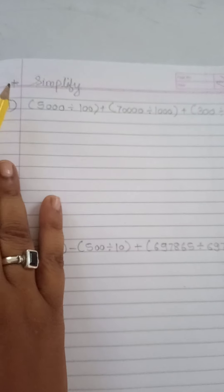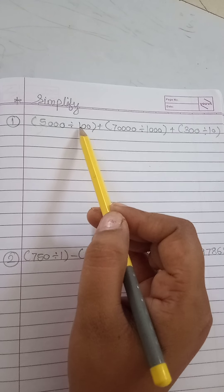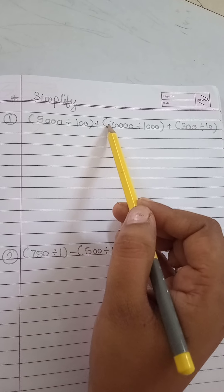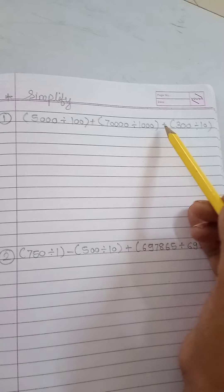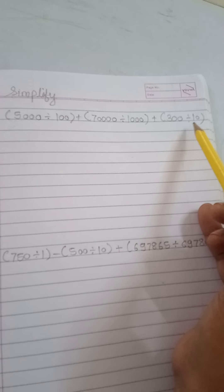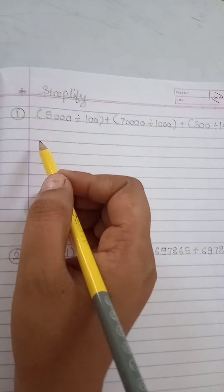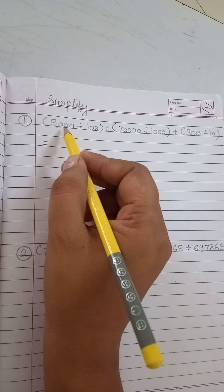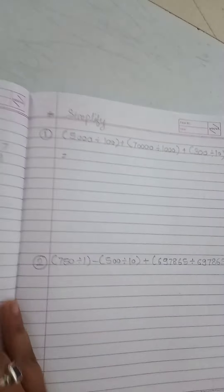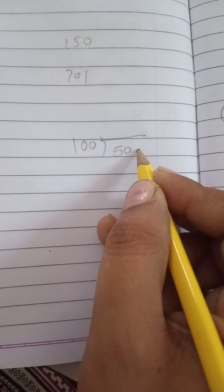So we have to take one example of simplify. See here: in bracket 5000 divided by 100, bracket complete, plus 70000 divided by 1000 in bracket complete, plus 300 divided by 10 in bracket complete. How to do simplify? Firstly we have to solve the bracket. So 5000 divided by 100.